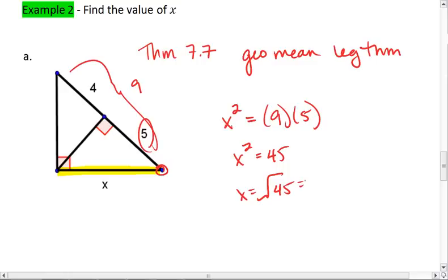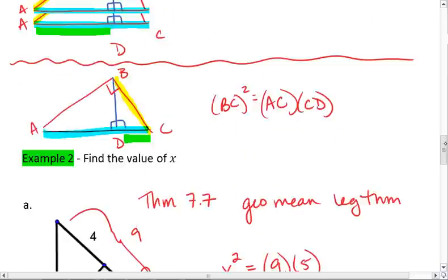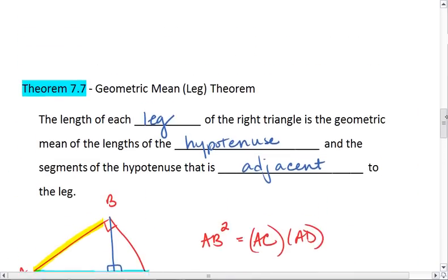If you want to, you can enter this into your calculator. It's approximately 6.708. If you round, do make sure that you round properly. And there we go. All right. So that was the geometric mean leg theorem.